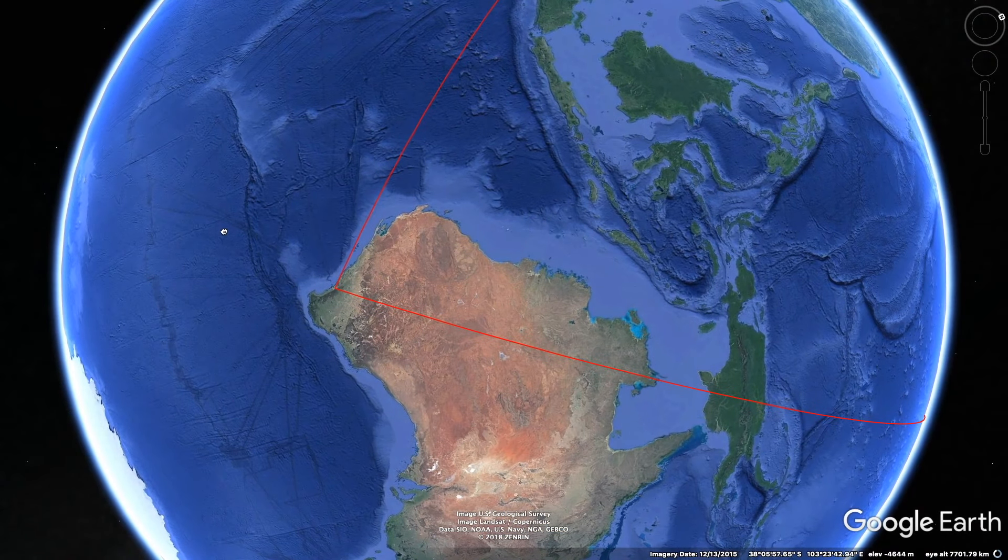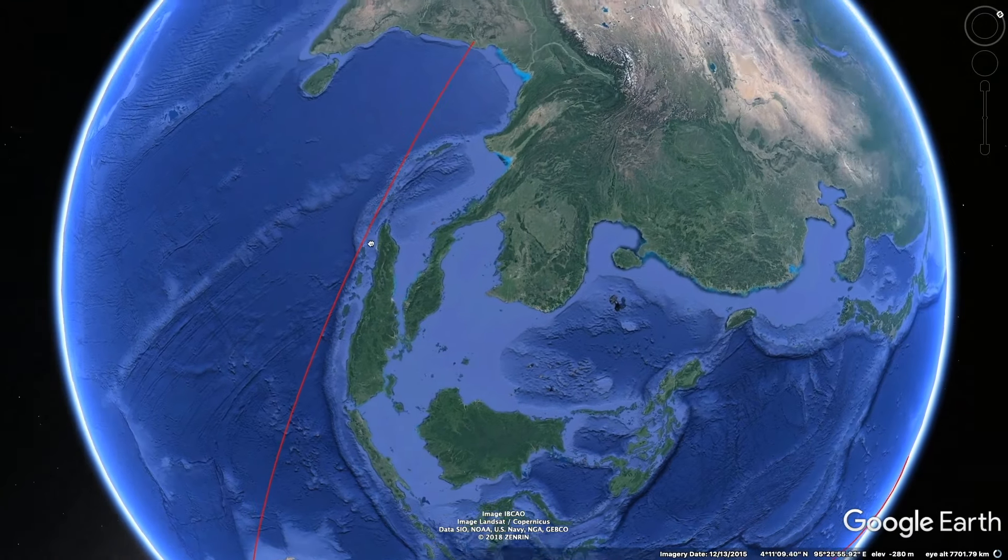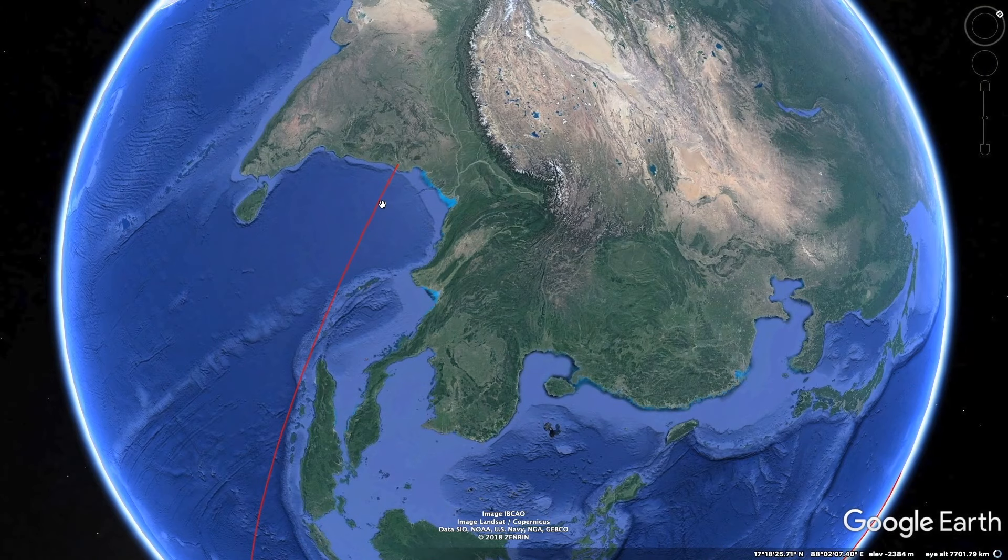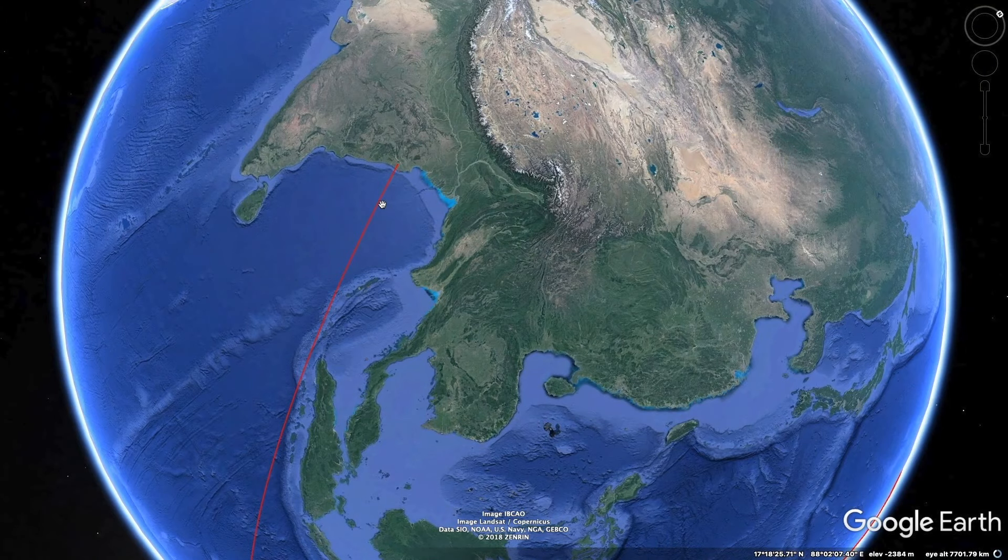Let's draw a line to the same scale to the nearest star. Now we're going to head on down here to Perth, Australia, and keep going. That's 15,000 miles to the nearest star.